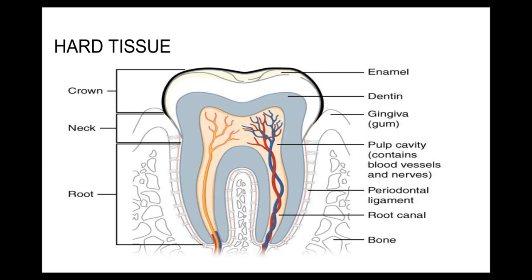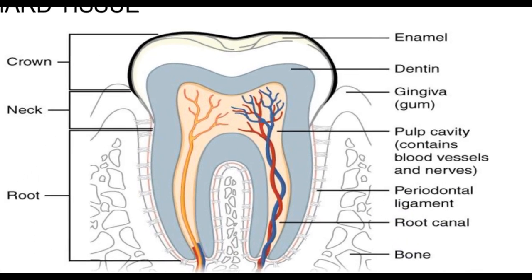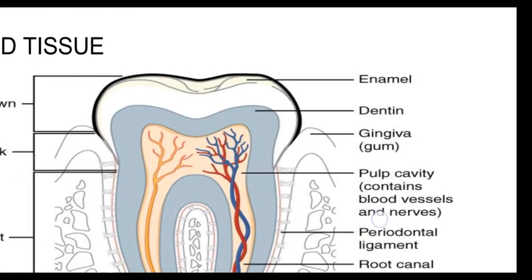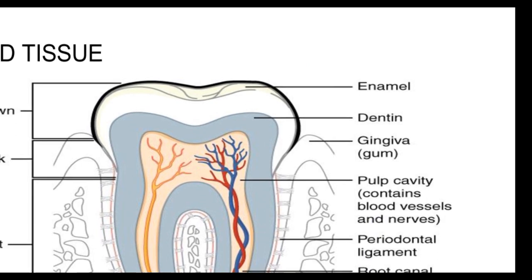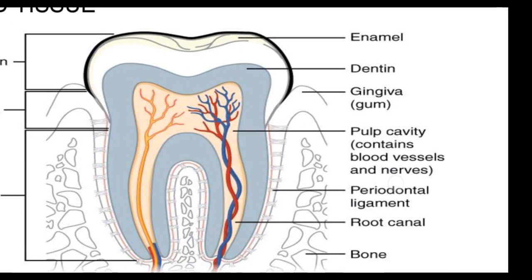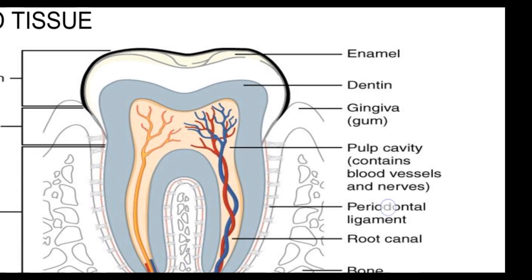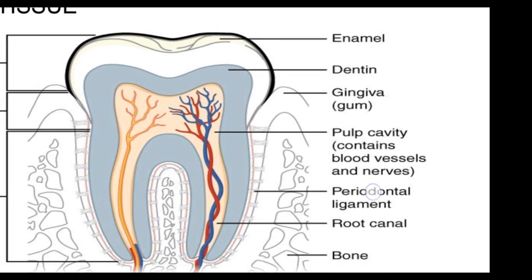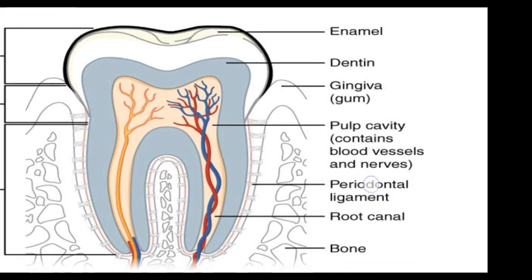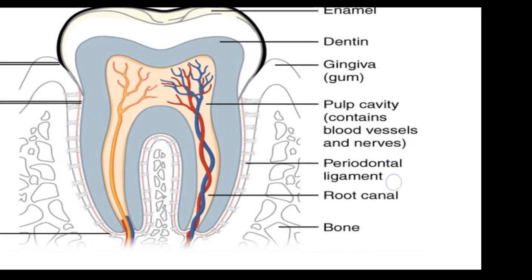In this diagram we can see the hard tissues: enamel, the outermost covering of the tooth; dentine, the layer lying under the enamel, which is also a hard tissue; and cementum, which is also a hard tissue.